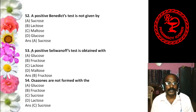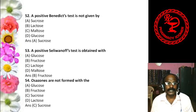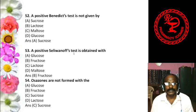Question 13: The most important epimer of glucose is — A. Arabinose, B. Fructose, C. Galactose, D. Xylose. The answer is galactose. The most important epimer of glucose is galactose — very, very important.